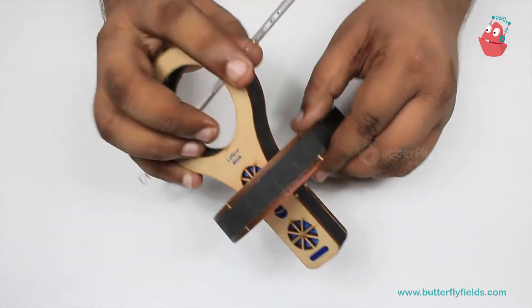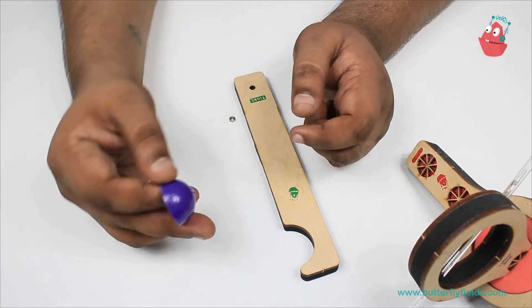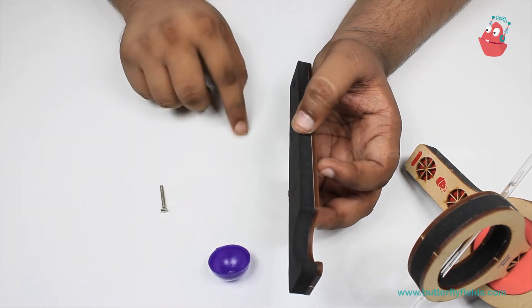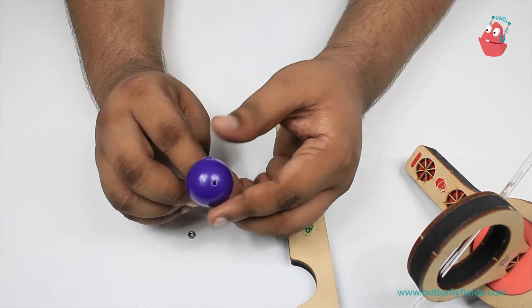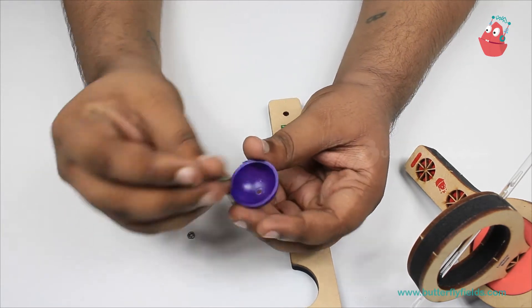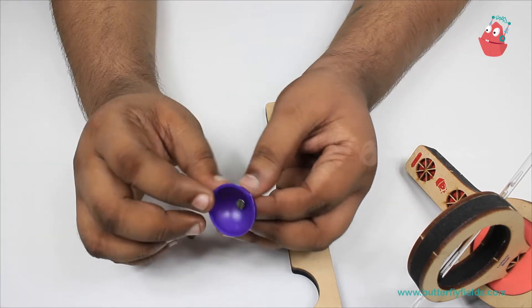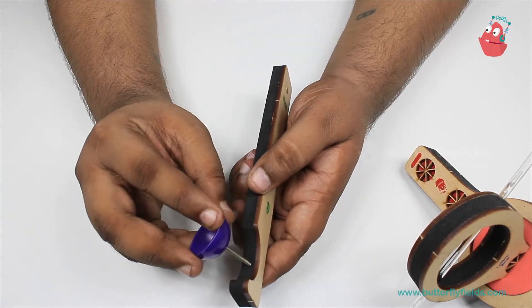The next step is to fix this cup with a hole onto this catapult hand using the nut and bolt. So first, we will put this here all the way through, and then this here.